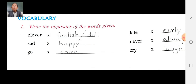Write the opposites of the words given. Clever — opposite: foolish or dull. D-U-double-L, dull. Clever opposite: foolish or dull. Sad — opposite: happy. H-A-W-P-Y, happy. Sad opposite: happy.